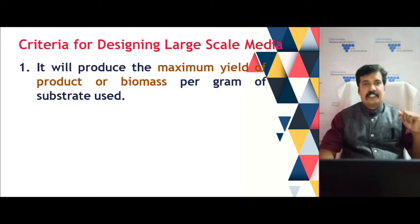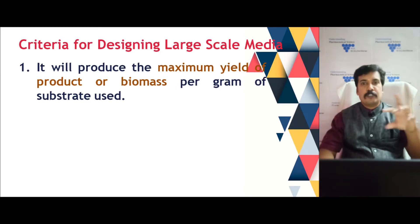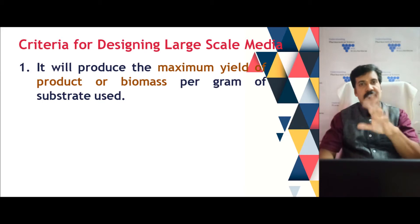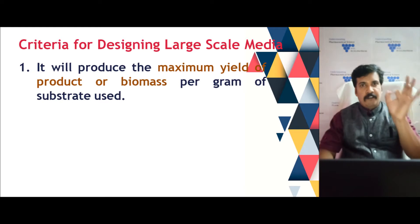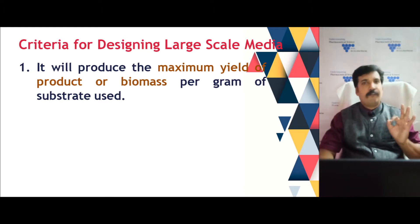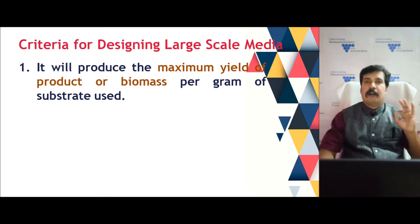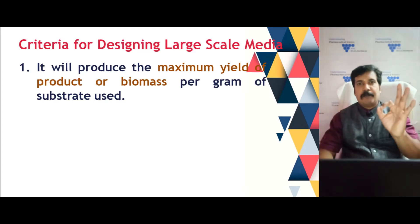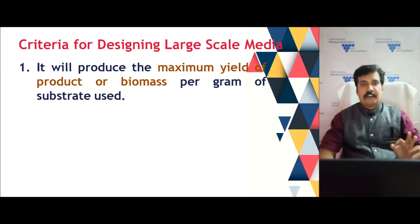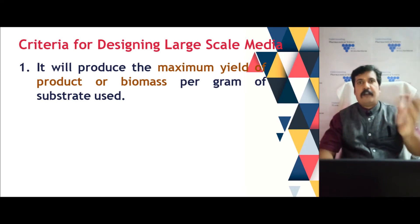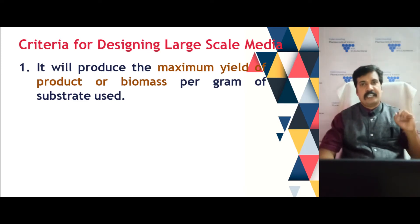Before designing the fermentation media, we keep certain criteria to ensure the media is prepared in a perfect manner. The first criterion is that the media should produce a maximum yield of the product or biomass for each gram of substrate added. Our core objective is maximum yield of the product. For example, in alcohol fermentation, we need maximum yield of ethanol from glucose — how much ethanol we get per gram of sugar becomes a basic criterion.